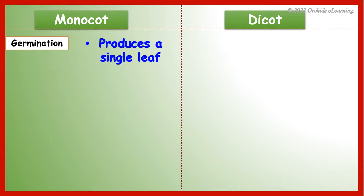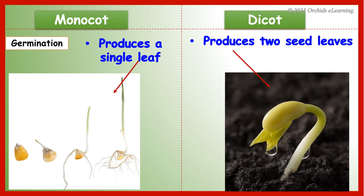After germination, monocot seeds produce a single leaf, whereas dicot seeds produce 2 seed leaves.